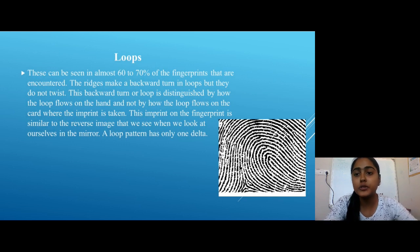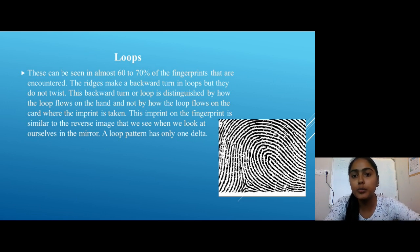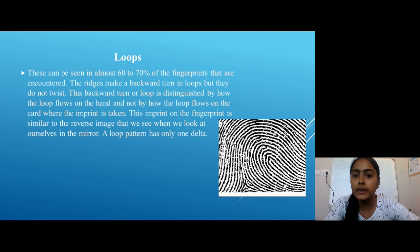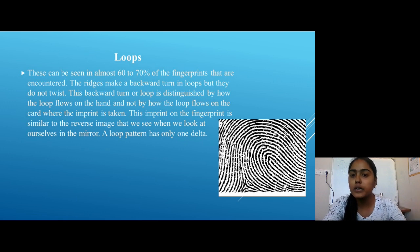The second pattern is Loops. This can be seen in almost 60–70% of the fingerprints that are encountered. The ridges make a backward turn in a loop but do not form a complete circle. This backward turn or loop is distinguished by how the loop flows on the hand and not by how the loop flows on the card where the imprint is taken. The imprint on the fingerprint is similar to the reverse image that we see when we look at ourselves in the mirror.